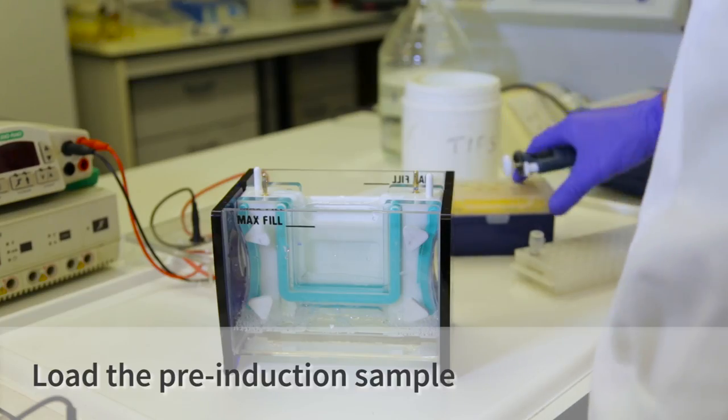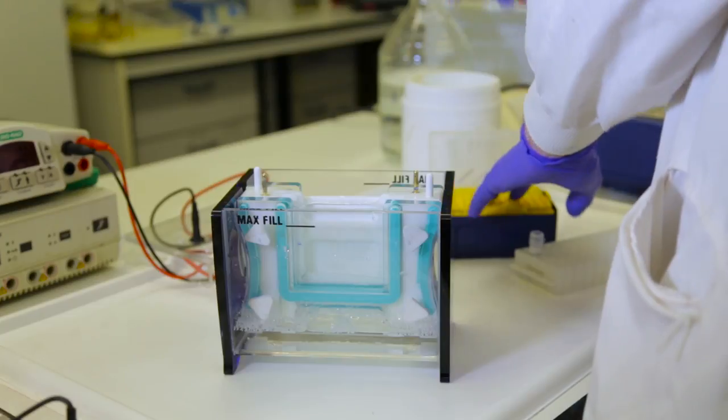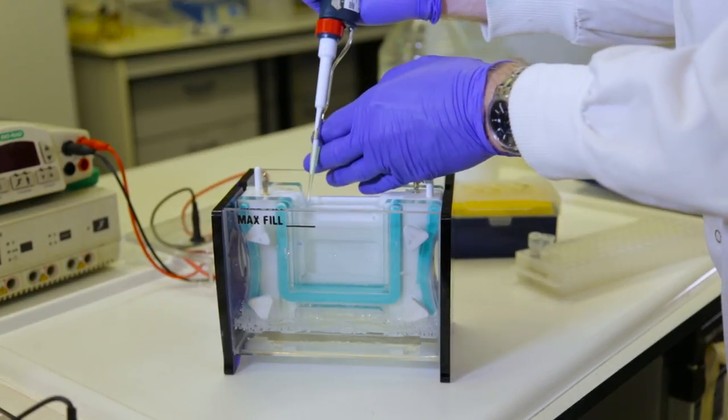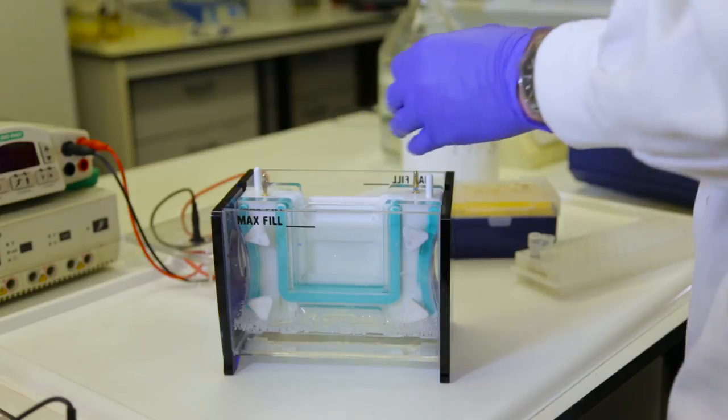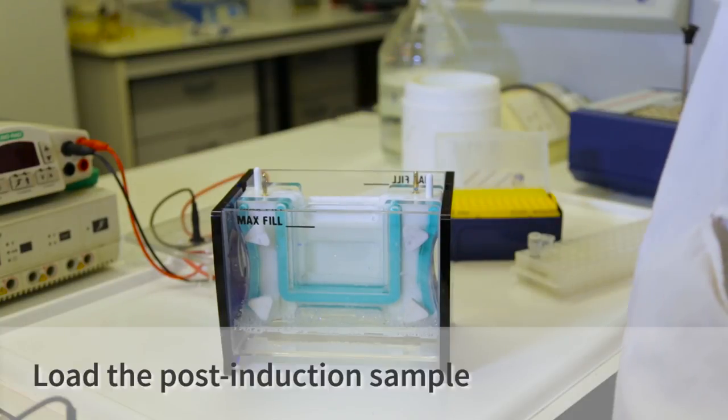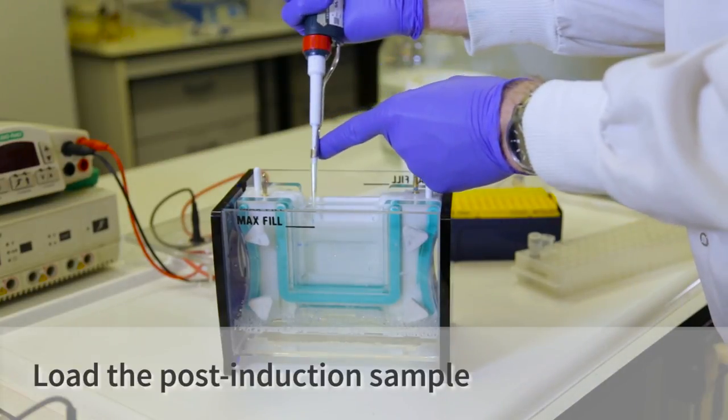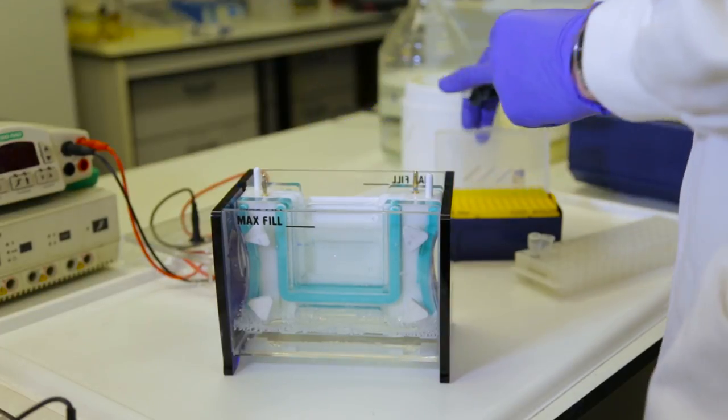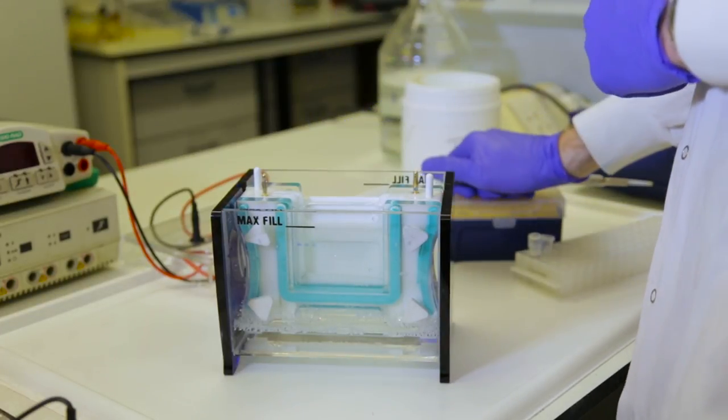The next sample we're going to load is the pre-sample. This is taken before we induced our protein, so it should be telling us exactly what proteins the E. coli was producing before we induced ours. Now we're going to load the post-sample. This sample was taken three hours after we induced, so hopefully we should see a band where our protein is present.